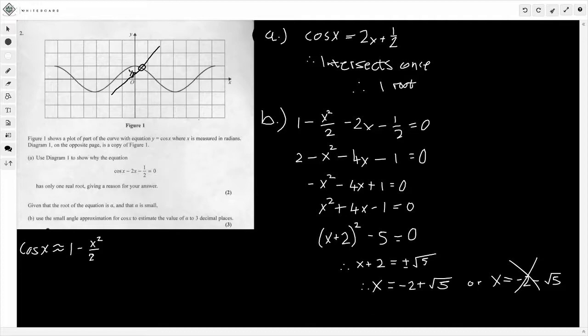So, if we work this out to three decimal places, what we obtain is that alpha is going to be equal to 0.236 to three decimal places as required. And, there we have it. So, that's question two fully complete.